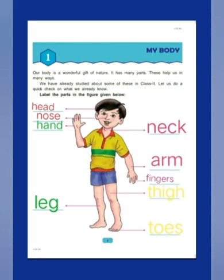Now moving to the other side: the first one represents the neck, then there are arms. Below the arm, there are fingers. Below fingers, there is the thigh. And below the thigh, there are the toes.